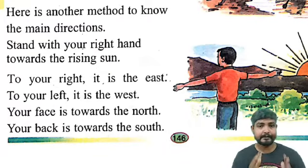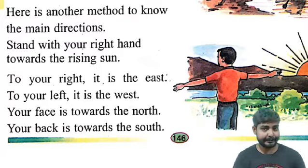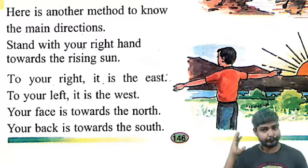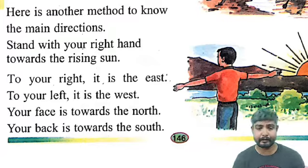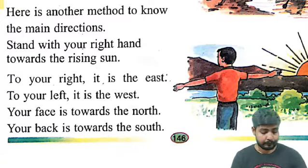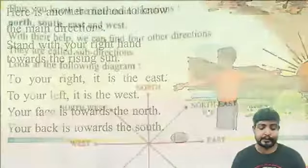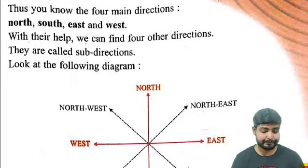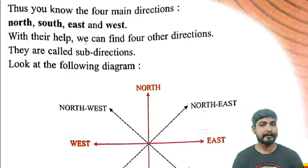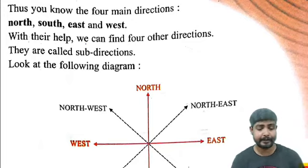So to summarize: the direction from which the sun rises is East, and where it sets is West. Your left hand is towards North and your right hand is towards South. That is how we find out the four main directions — North, South, East, and West.